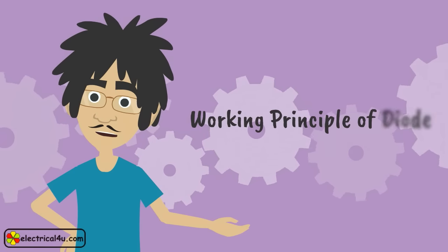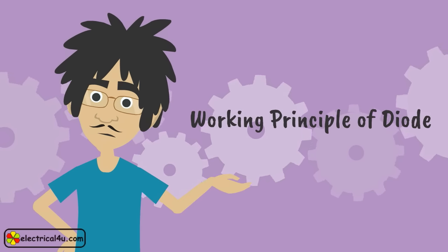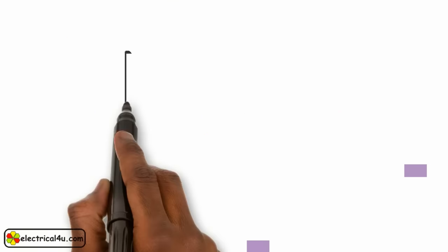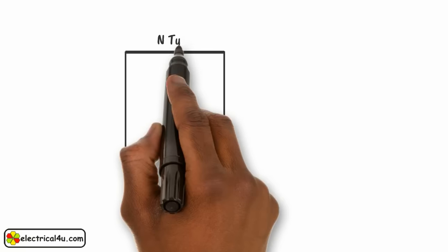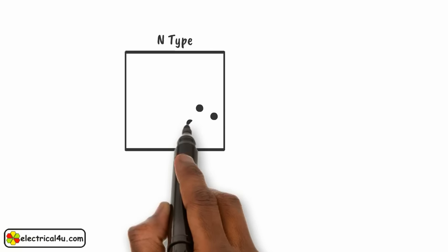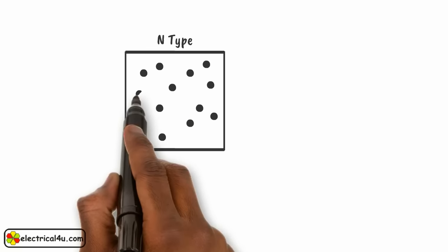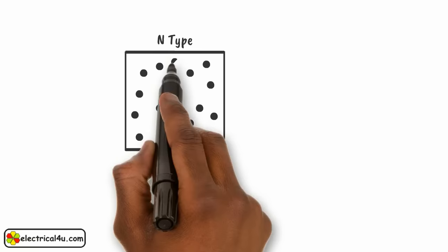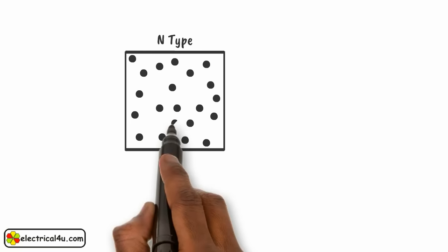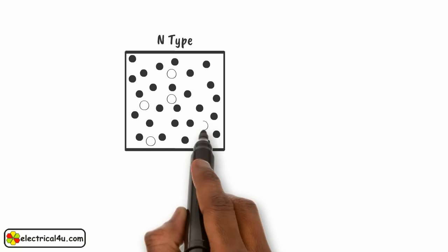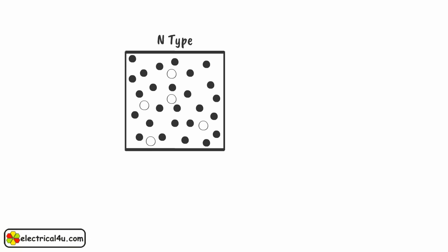We will discuss now the working principle of a diode. An N-type semiconductor block will have a significant number of free electrons and very little number of holes. Holes present in N-type semiconductor are due to generation of electron-hole pairs, mainly caused by thermal excitation.